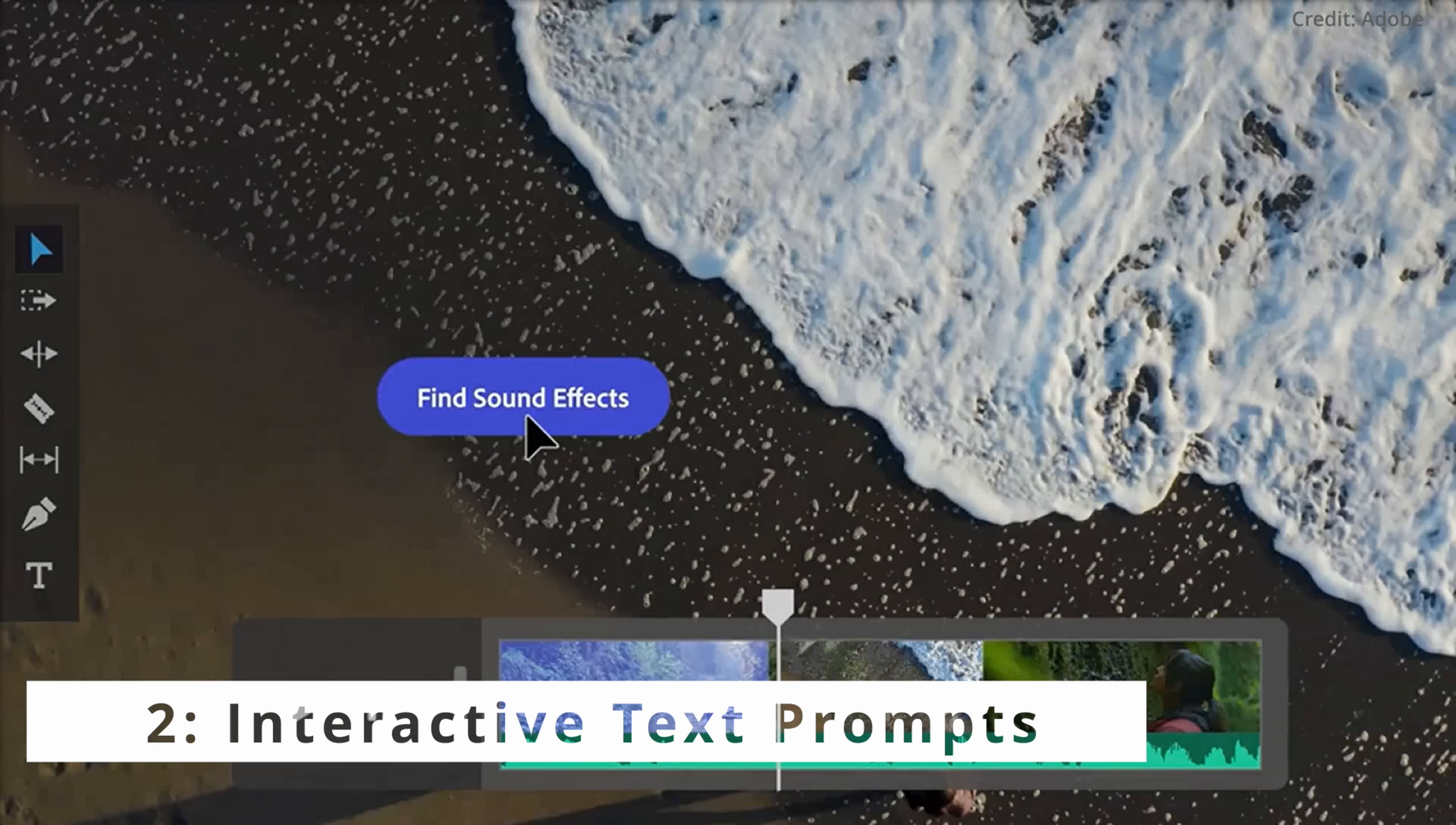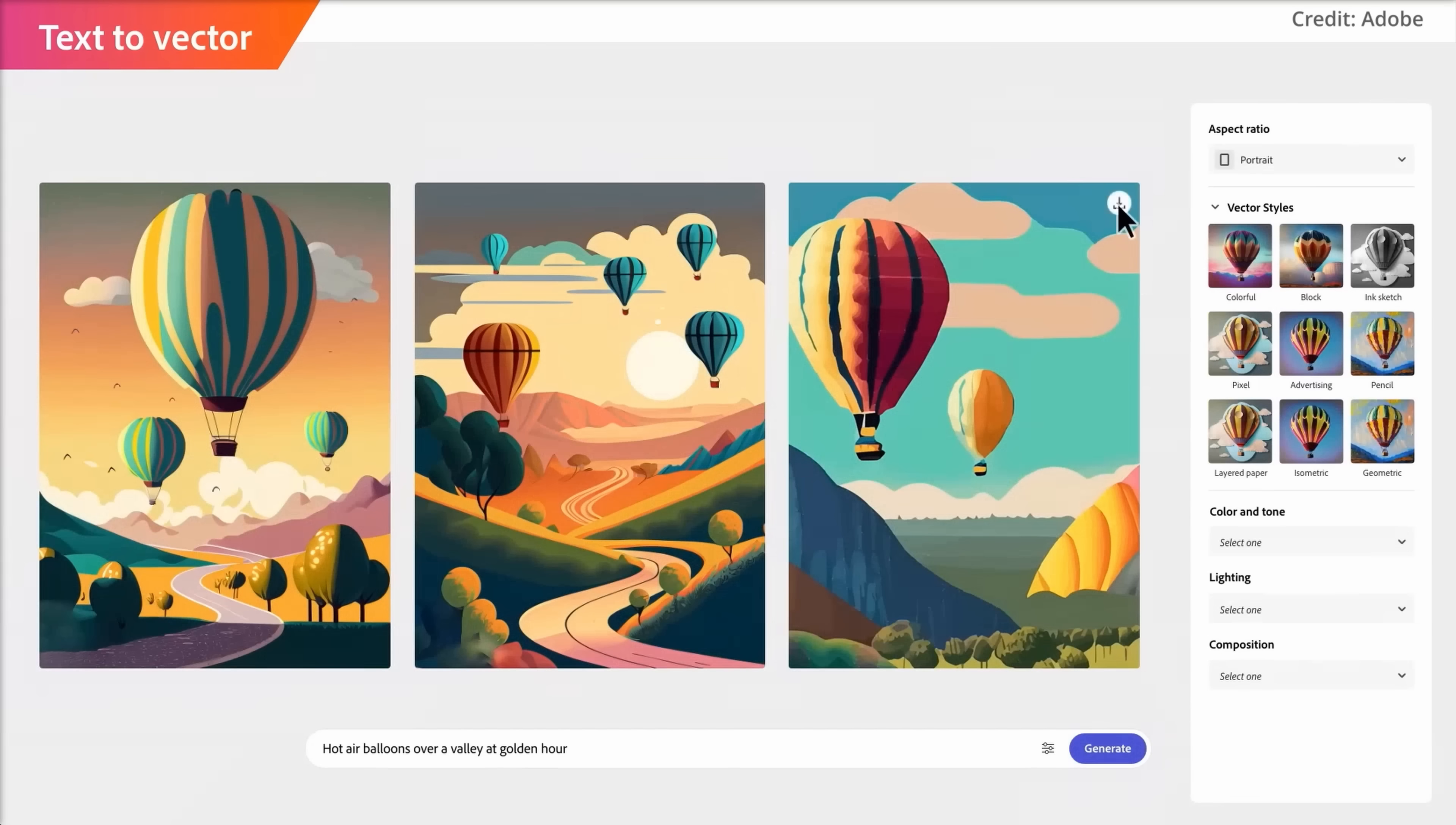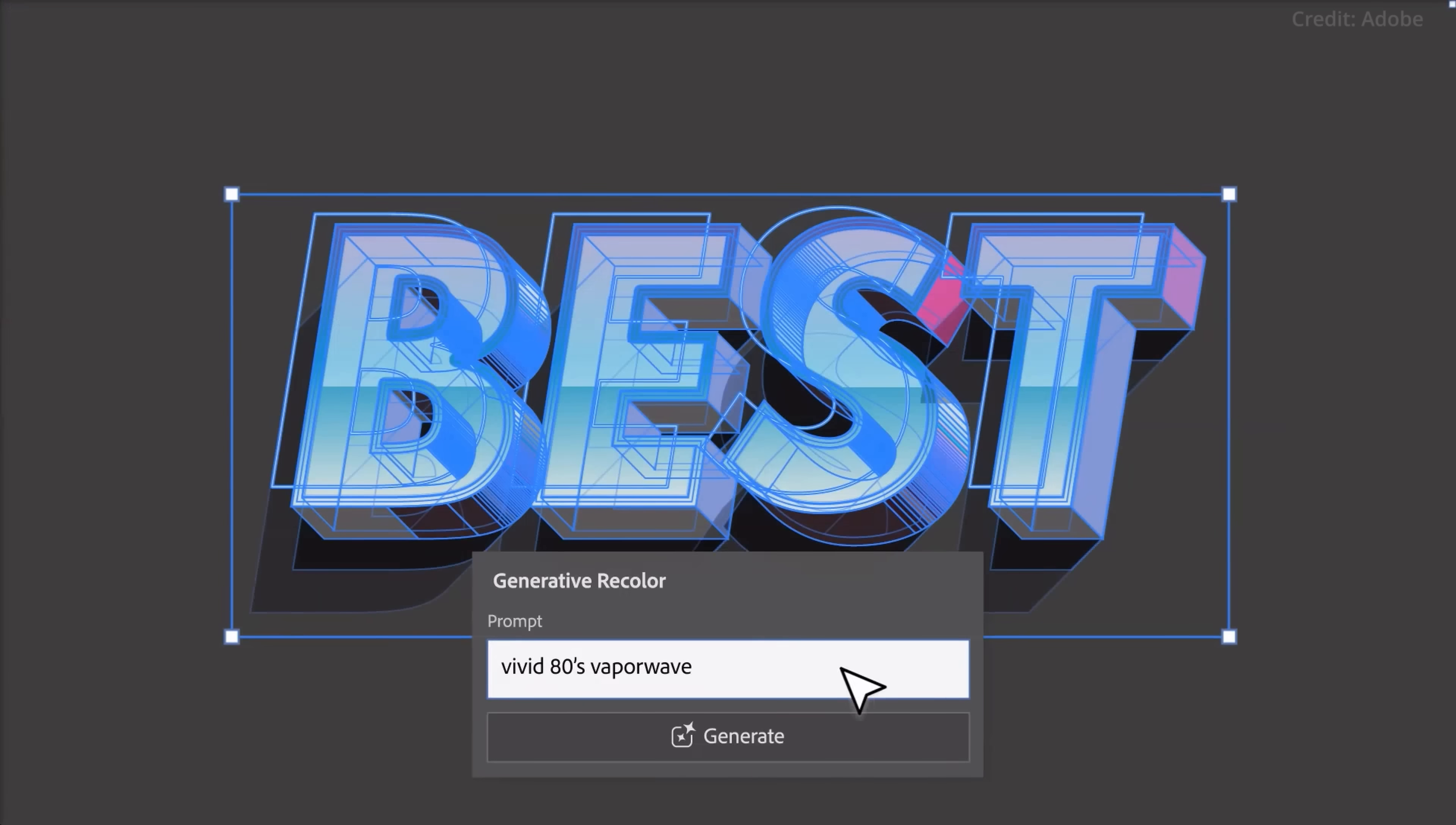Number two, interactive text prompts. The power behind this transformative tool lies in its interactive text prompts, able to interpret commands and shape 3D models based on the user's instruction. For instance, using a simple text prompt like whiskey glass on wooden table, the AI would mold the scene accordingly, placing the whiskey glass where you would have envisioned it. This integration goes a long way in showcasing Adobe's dedication to making AI tools more intuitive and designer-friendly.